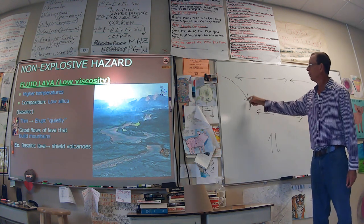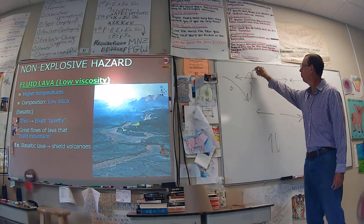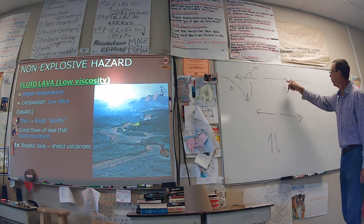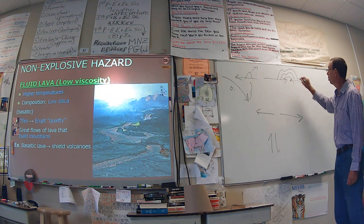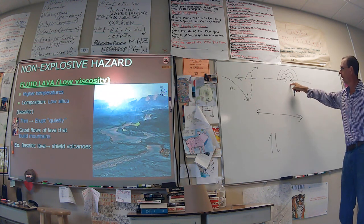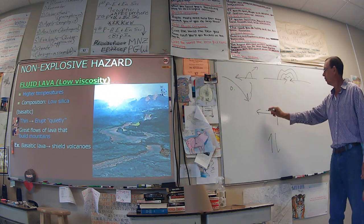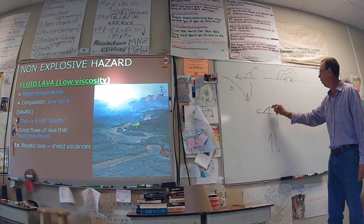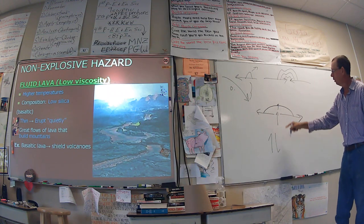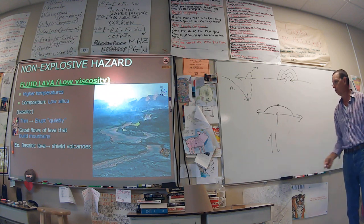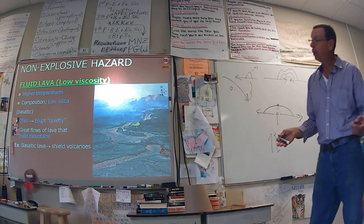If they subduct, it's always oceanic crust that subducts — it'll melt. If they're colliding head-to-head, it's going to make a folded mountain range, like the Himalayan Mountains or the Appalachian Mountains. If they're moving apart from each other, they're going to make a volcano, which is usually underwater. Side-to-side is going to be earthquakes. That's plate tectonics in a nutshell — we've already done that.